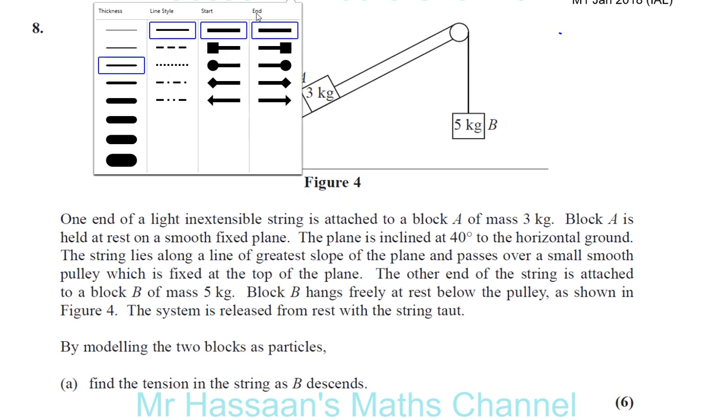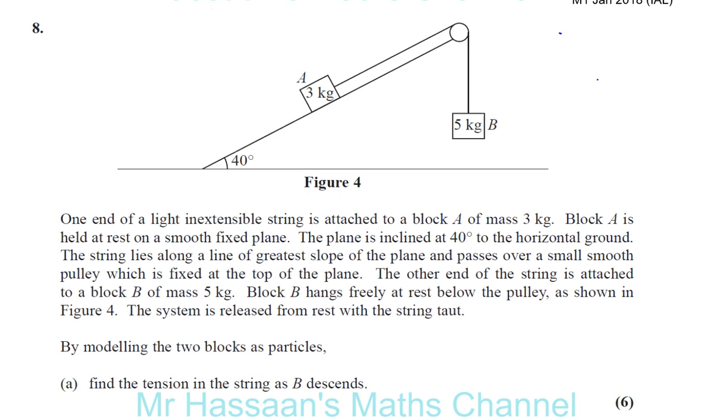So now what we have here, let's draw all the forces on these two particles. Of course you've got the weights which act vertically down. The weight here is 3g and the weight here is 5g. You've got the tension in the string which is the same in both because it's one piece of string, pulling the particles up. Now you've also got here the reaction force when you have this in contact with the surface, always at an angle which is perpendicular to the surface. There's no friction involved here because it says it's a smooth plane. So those are all the forces acting.